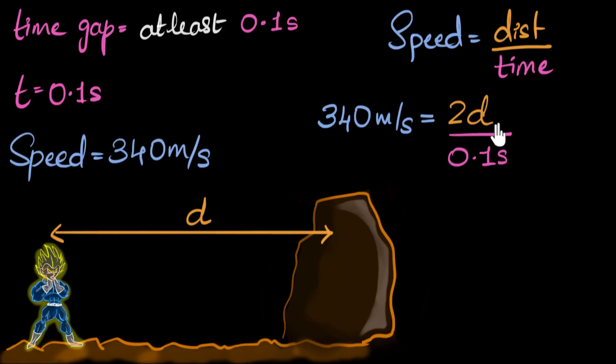That makes sense, right? This 0.1 second is the time for which the sound is going forward and backward. And so the total distance has to be 2d. And if you look carefully from here onwards, we just have to figure out what d is. That means all we have to do is algebra.